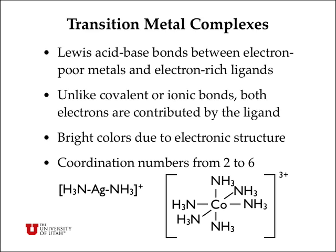Transition metal complexes can have coordination numbers — numbers of metal-ligand bonds — ranging from 2, for example in the silver diamine complex, to 6, which is a fairly common arrangement of ligands around a central metal ion, as shown for this hexamine-cobalt-3 complex.